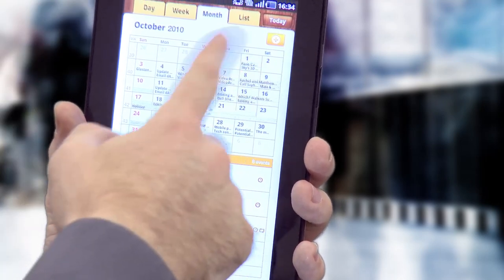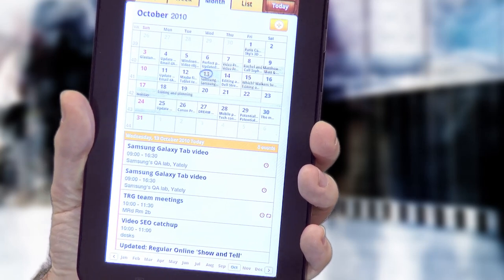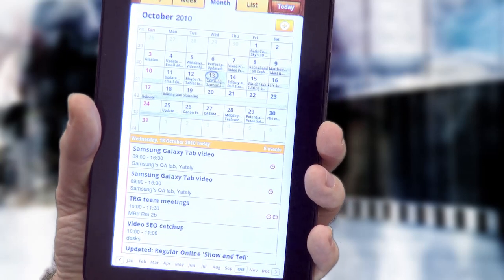You can also bring in all the birthday details and event details from Facebook. And they'll show here in different colours.